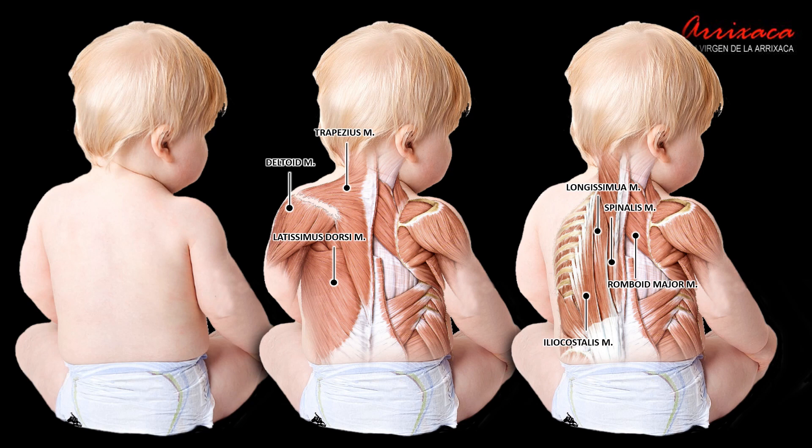Iliocostalis — the lateral, outermost component of the erector spinae — runs from the pelvis to the upper thoracic vertebrae and is responsible for extending and laterally flexing the spine. Longissimus, positioned in the middle of the erector spinae group, runs from the sacrum to the upper thoracic vertebrae, and assists in extending the spine while also contributing to lateral flexion and rotation.